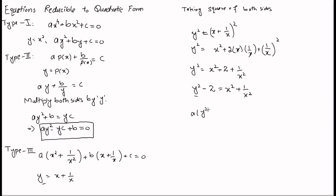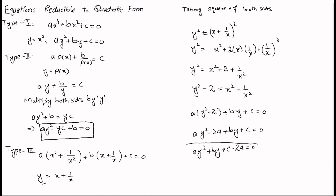Substituting into the equation gives a(y² − 2) + by + c = 0, which expands to ay² − 2a + by + c = 0, or ay² + by + (c − 2a) = 0. This is a quadratic equation which can be solved by any of the standard solving methods.